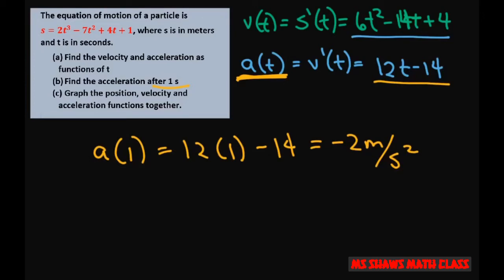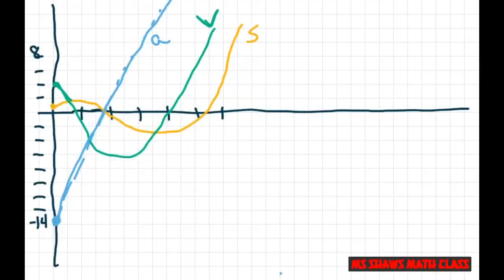Now for the graphs, I put this one in the calculator and then I put this one in the calculator and this one in the calculator. I tried to graph it here with your 8 going up to 8 here and negative 14 because we have a y-intercept for the acceleration at 14. So it's a line. The position is S and your velocity is your V.